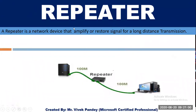What is repeater? A repeater is a network device that amplifies or restores signal for long distance transmission. We use a repeater to amplify signal for long distance transmission.